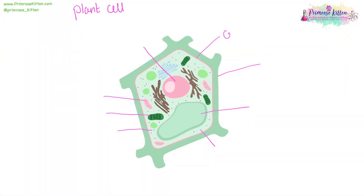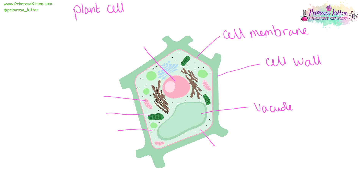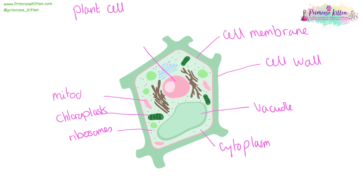Here we have our plant cell with a cell membrane, which is responsible for determining which bits go in and out of the cell. The cell wall is important for structure. The vacuole is important for structure. The cytoplasm is where most of the reactions take place. The tiny little dots are the ribosomes, which are responsible for protein synthesis. The green bits are the chloroplasts. The pink ones are the mitochondria, where energy is produced. And last but not least, we have our nucleus.